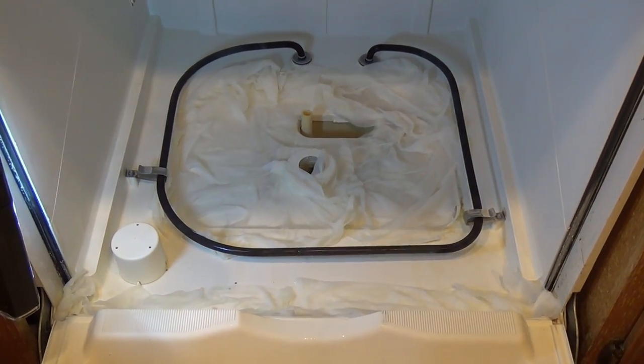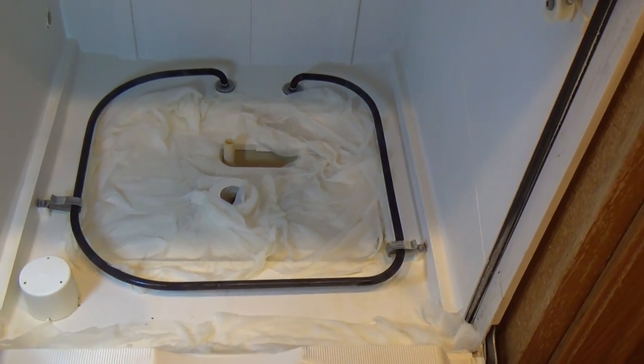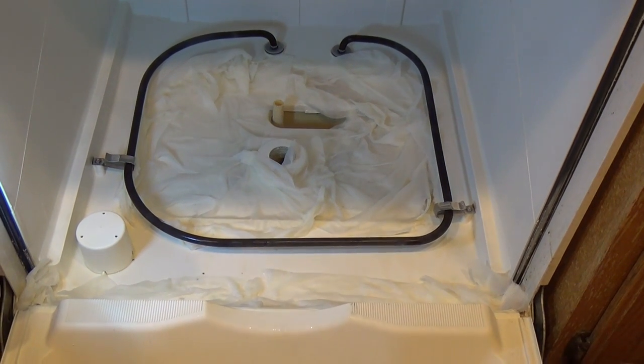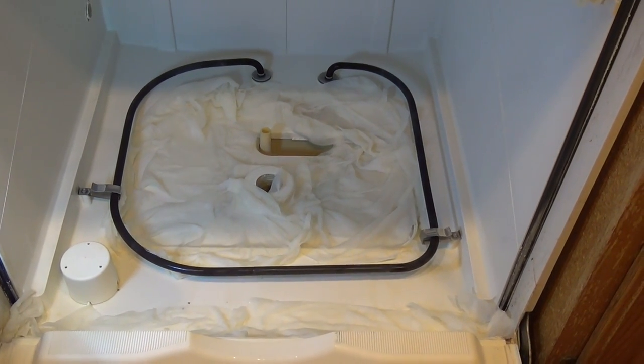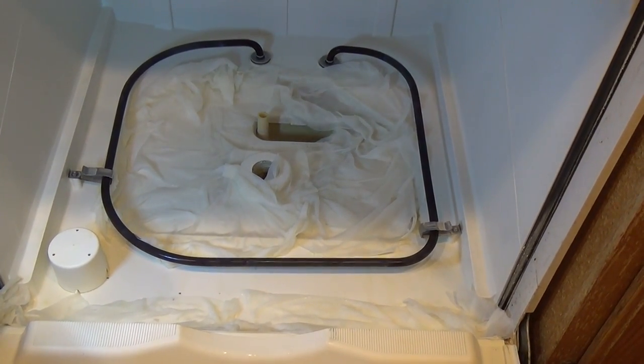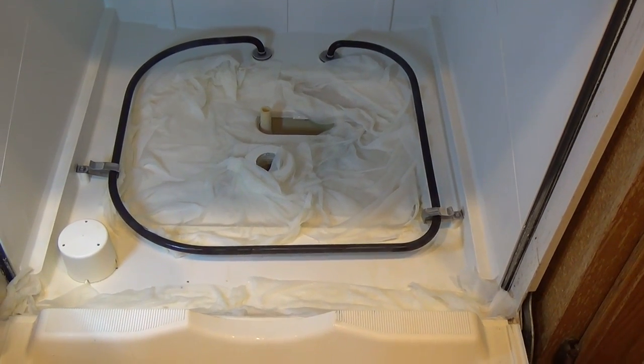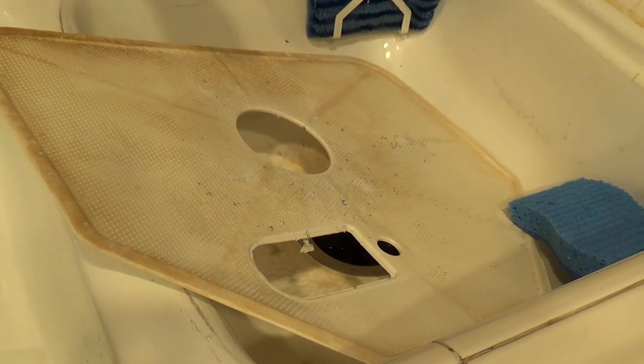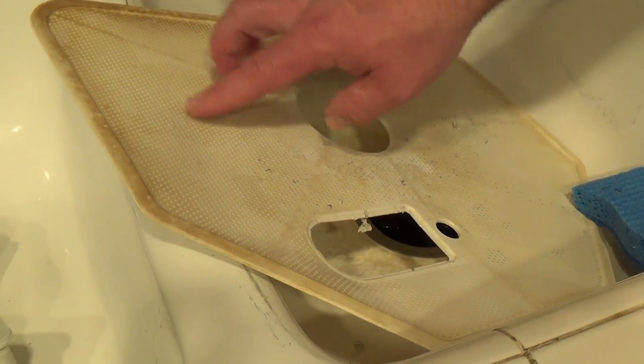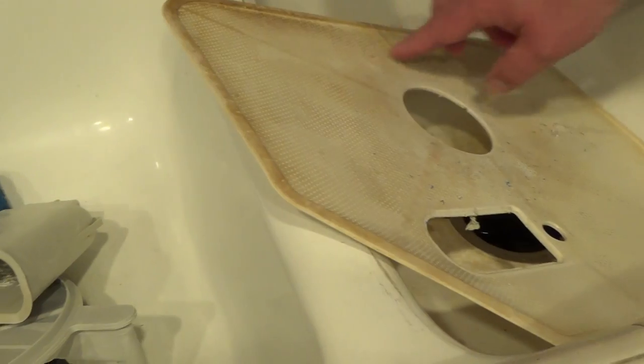So we use some vinegar and soak the paper towel. Because ours is just a lot of soap scum. Yes, a lot of soap scum. So we're soaking in vinegar to loosen it up so we can get it out of there. We're just cleaning the parts. So we have to clean all the parts and get all the soap scum out of all the holes.